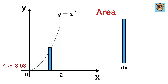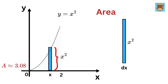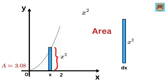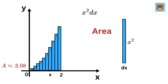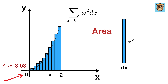Assume for this parabola, at some value of X, we have the height of this rectangle as X squared. So the area of this rectangle will be X squared times its width, or DX. And then we sum all of these areas, which will be the summation of X squared times DX, where the value of X goes from 0 up to 2. This is what is called integration.